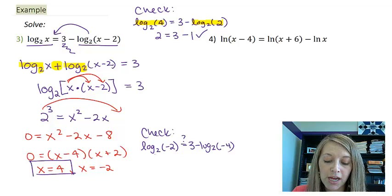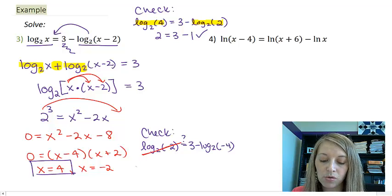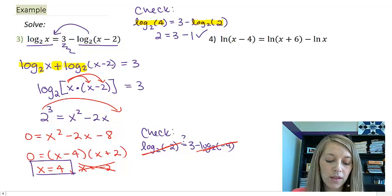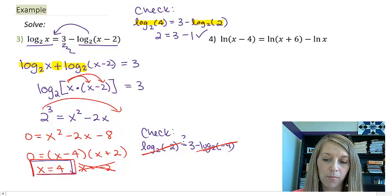We know that this, in fact, does not check out because I cannot even do logs of a negative number. Neither one of these actually checks. So this one is not a solution. We only have one solution to this problem.